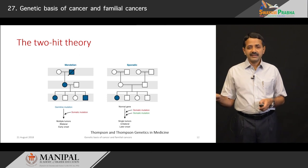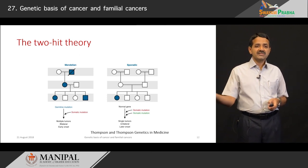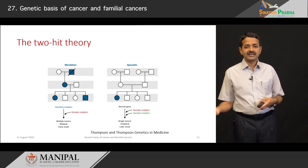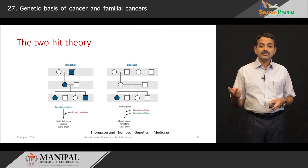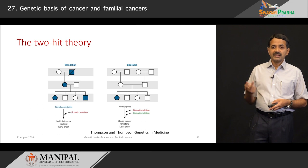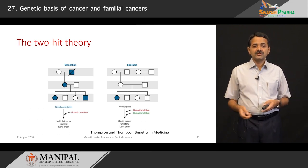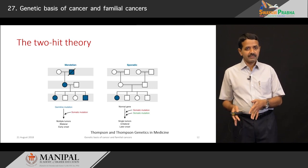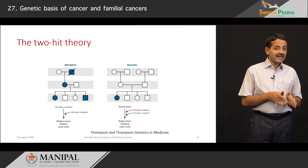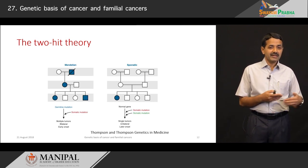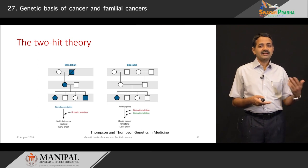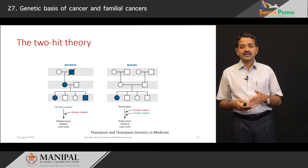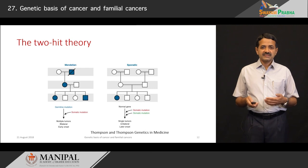In sporadic cancers there is no inherited mutation — both mutations are acquired during one's lifetime. By chance if both occur in the same cell, the cell becomes malignant. Sporadic cancers need two hits and are usually rare events, resulting in single tumours, unilateral and later in onset. Mendelian cancers account for only 5 percent but are characterized by multiple tumours, bilateral presentation, and early onset compared to sporadic cancers which are single tumours, unilateral, and later in onset.